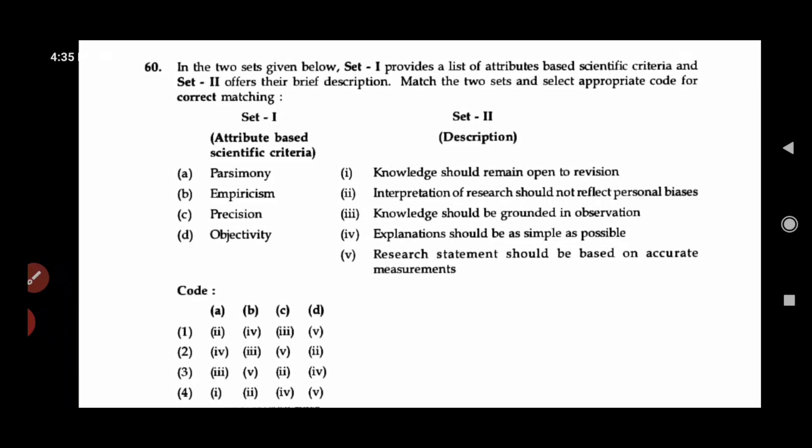So next is, again, match the following. The methods with their description. So we'll start off with parsimony. Parsimony is explanations should be as simple as possible. So since A is 4, let us cancel out 1, 3, and 4. That means our answer is 2, which is very easy.